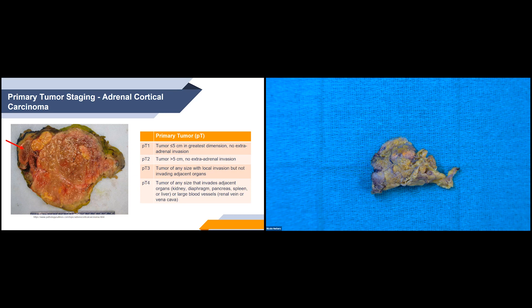T2 is when the tumor is greater than 5 centimeters, again with no extra-adrenal invasion. T3 is any size tumor with local invasion into the periadrenal soft tissue. T4 is a tumor of any size that invades adjacent organs or larger blood vessels, including the renal vein or vena cava. The image on the PowerPoint shows a T4 tumor invading into the liver.